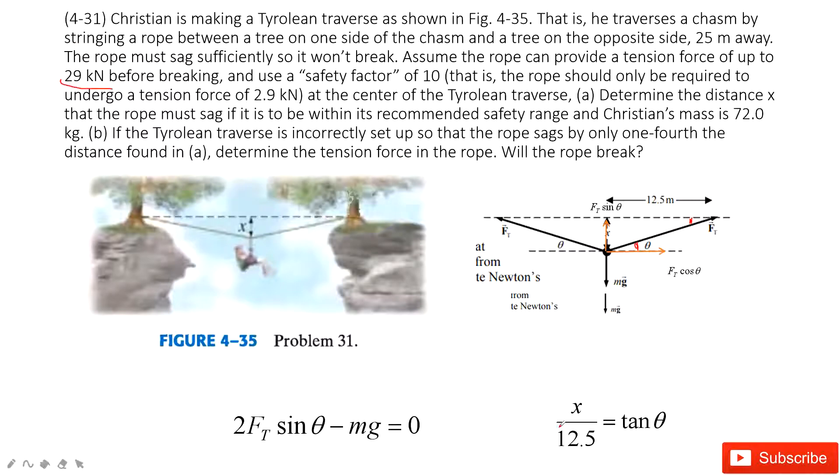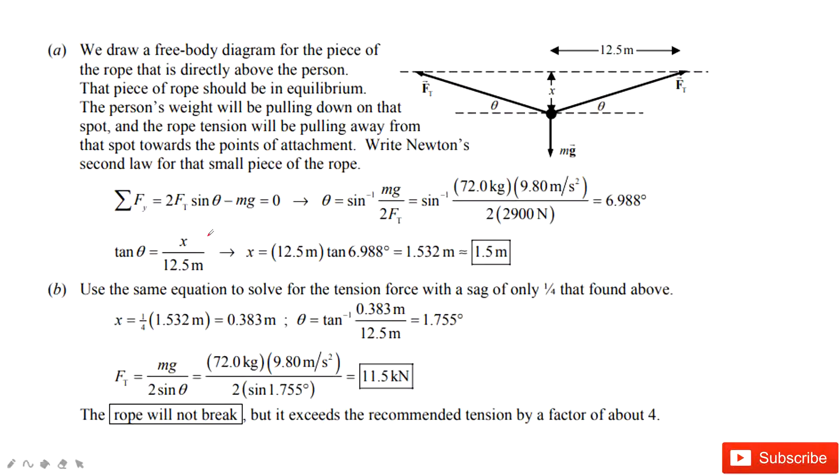So in this one, we still consider this equation. By this time, this distance becomes one quarter of the x. Because in part a, we calculated x is 1.5 meters. And then when this range becomes one fourth of it, so this x is also one quarter of 1.5 meters.